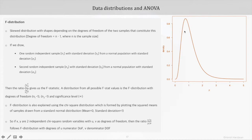It's normally a skewed distribution as we see here on the slide, and the shape depends on the degrees of freedom of the two samples that constitute the F distribution. From an academic point of view, it's good to know that the F distribution is also explained using the chi-square distribution.